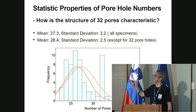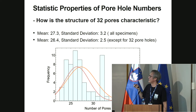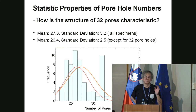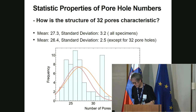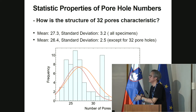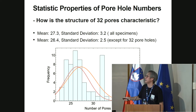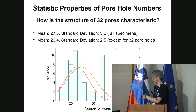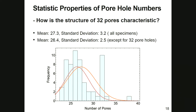First of all, the 32-pore case is extreme and special. We should treat the 32-pore specimens as special cases. If we ignore these cases, we can draw a normal distribution type, and we obtain a distribution similar to a normal distribution.